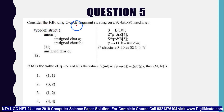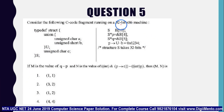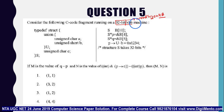They are giving a definition of structure S and performing some operations on it, considering a C code fragment running on a 32-bit x86 machine. On a 32-bit machine the word size is 4 bytes, whereas on a 64-bit machine the word size is 8 bytes.